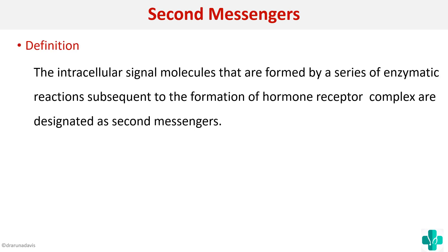We can start the answer by writing an introduction which should include the definition of second messengers. Second messengers are intracellular signal molecules that are formed by a series of enzymatic reactions subsequent to the formation of a hormone receptor complex. They are designated as second messengers.